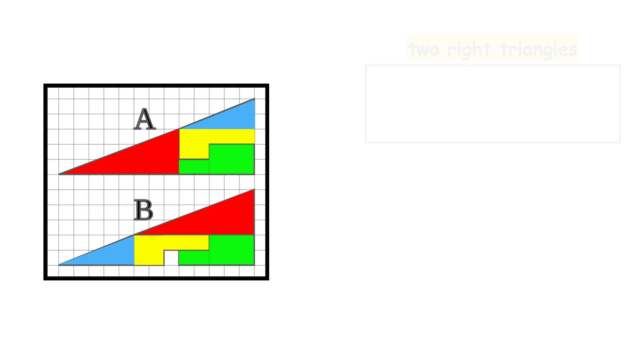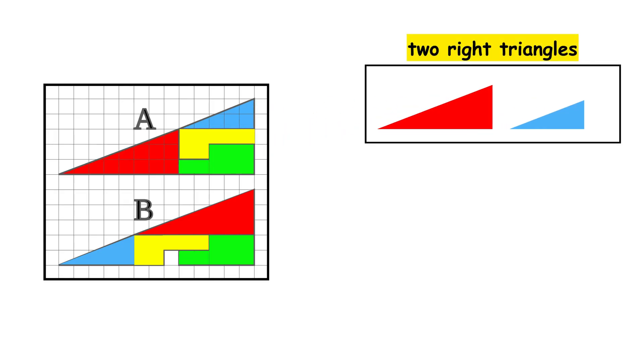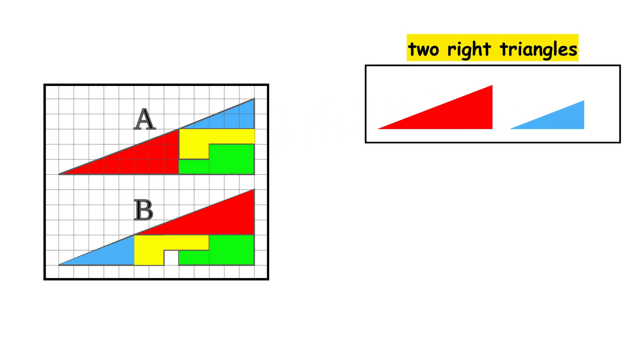These pieces can be identified as two right triangles, red and blue, of different sizes, and two irregular parallelograms, green and yellow, which are rearranged.